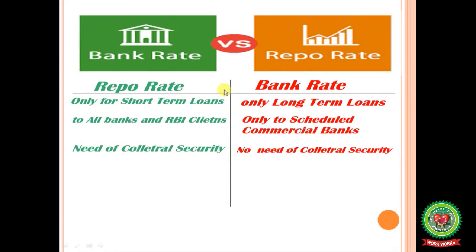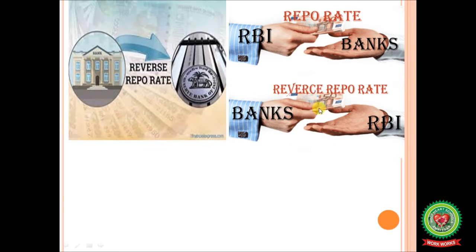The difference between bank rate and repo rate: repo rate applies to short-term loans to all banks and RBI clients, while bank rate applies to long-term loans only to scheduled commercial banks. In repo rate there is no need for collateral securities, while bank rate requires collateral securities. The RBI gives money to commercial banks at the repo rate, and in reverse repo rate, banks give loans to the RBI.